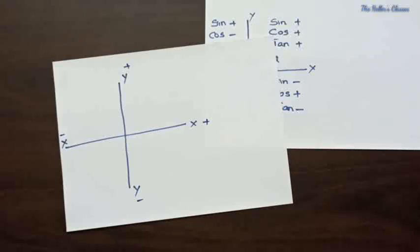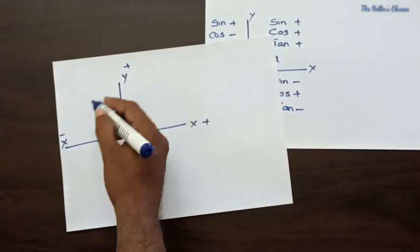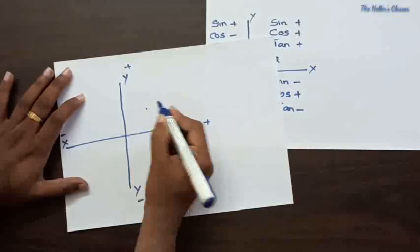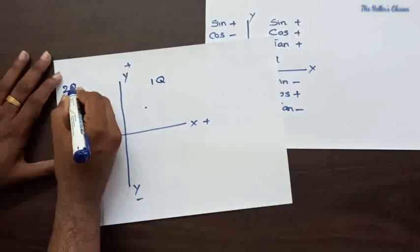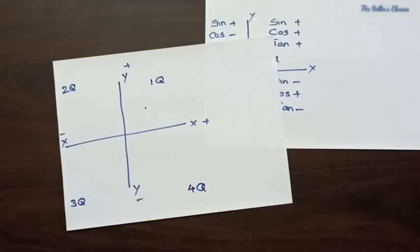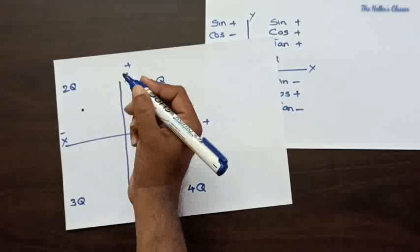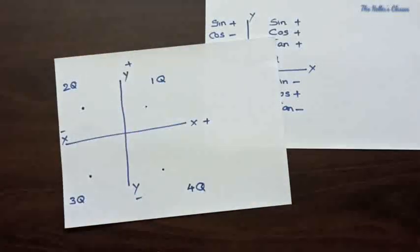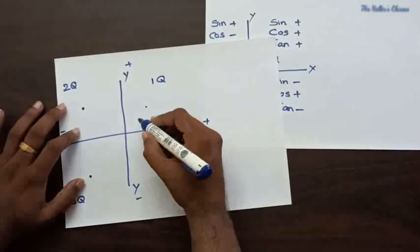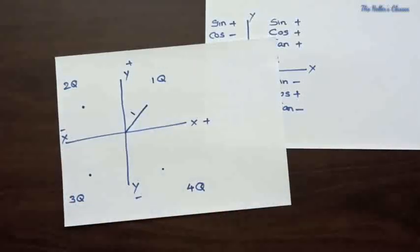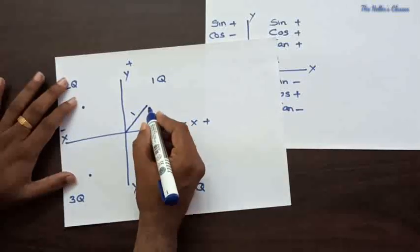Now I'm considering a point that is moving around this axis with respect to the origin O. In the first quadrant there is a point moving, and it moves to the second, third, and fourth quadrants. Based on this assumption I am proceeding with the explanation of 'All Silver Tea Cups.' I am taking a point rotating throughout the coordinates with respect to the origin, and I initially take the distance from that point to the origin as a unit distance.